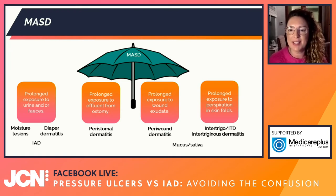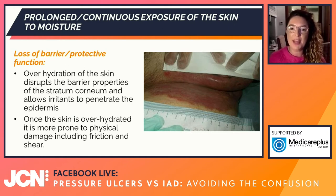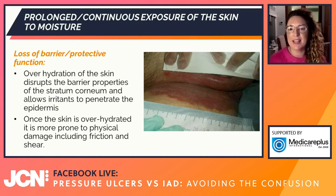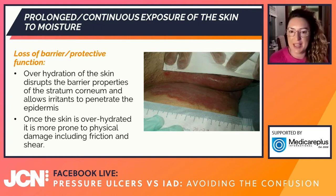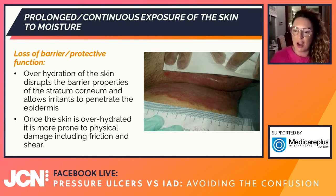Here is a typical intertrigo or skin fold moisture damage. The loss of the protective barrier function causes erythema and inflammation. Over-hydration of the skin disrupts the barrier properties of the stratum corneum — the very top surface — allowing bacteria and pathogens to penetrate the epidermis. Once the skin is over-hydrated, it's more prone to physical damage including frictional shear. Like staying in the bath too long and seeing your hands crinkle — they're more susceptible to skin tearing.